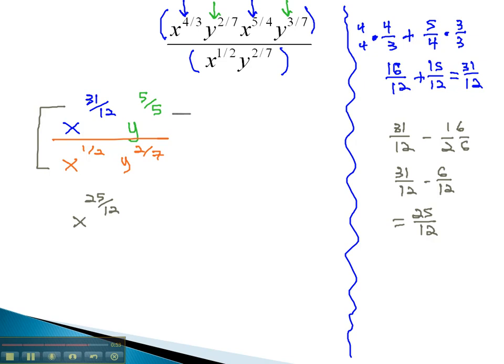Similarly, on the y's, we can subtract those exponents. Whoops, I think I wrote 5/5. I meant to write 5/7 on there. Now, we are ready to subtract the exponents, 5/7 minus 2/7, which we could probably do mentally by subtracting the numerators. 5 minus 2 is 3/7.